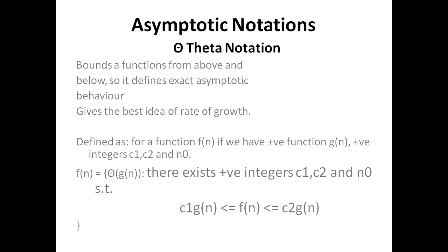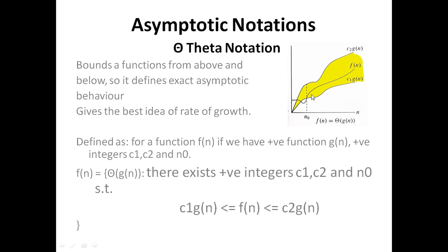Big Theta notation defines both the lower bound and the upper bound of an algorithm — the execution time will never go below c₁·g(n) and will never go above c₂·g(n). As seen in the graph, f(n) lies between c₁·g(n) and c₂·g(n) for all n ≥ n₀, so we write f(n) = Θ(g(n)).